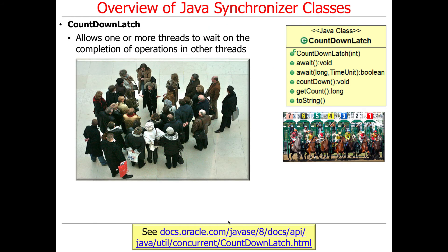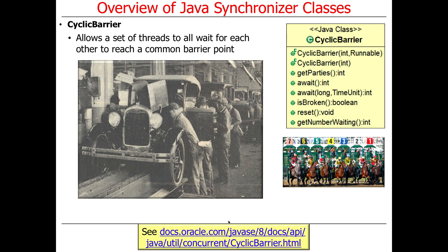A couple more things briefly. The next set of topics are all examples of barrier synchronizers. There's something called a CountDownLatch that allows one or more threads to wait on the completion of operations in other threads. An example might be a tour guide in a museum where the tour starts at 10 o'clock, and the tour guide doesn't start until everybody shows up. Similarly, you can't lock the store up until all the customers have left. CountDownLatch is one example of this.